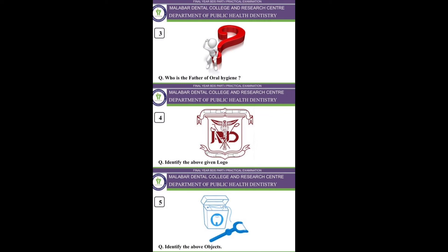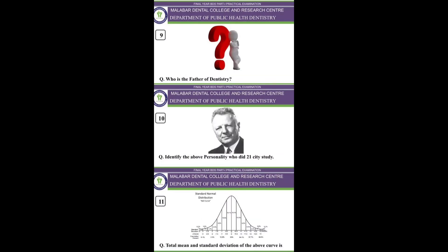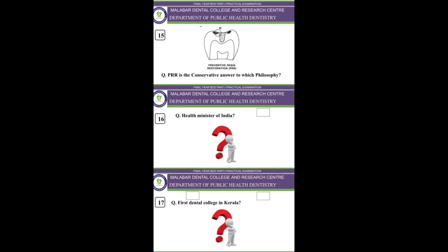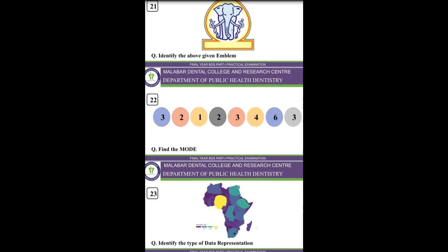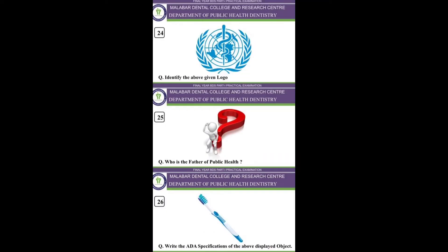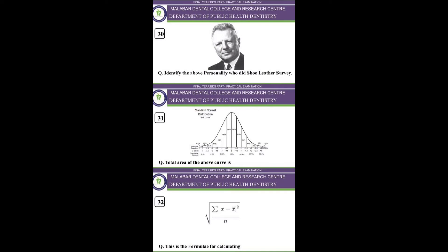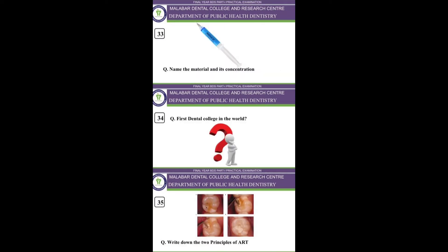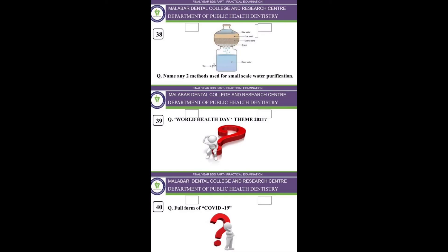Spotters are basically based on theory topics. You don't expect the same spotters in every college — what I prepare may change in every exam. They could include identifying a person, identifying an object, writing about the father of dentistry, the first dental college, a flow chart, a diagram, an equation, something from biostatistics, presentation of data, or some logos. It could be anything. Mostly they will be displayed on screen, but sometimes in some colleges they keep the objects physically and you have to identify them directly.